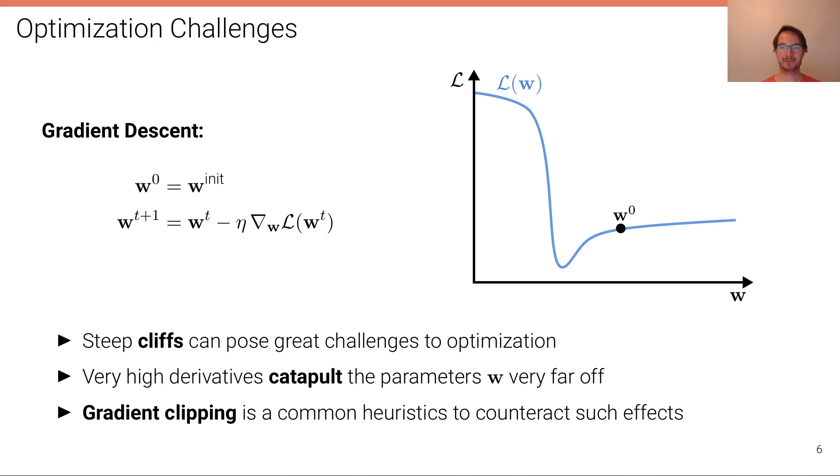Steep cliffs. This is what we call a cliff in a loss function or energy function landscape. It can pose great challenges to optimization as these very high derivatives can, as in the divergence case before, catapult the parameters w very far off. In this particular case, we start here and become closer to the minimum. We're increasing the gradient, so we're moving even a little bit further. But what happens now is if we're landing here, we have dramatically already increased the loss function.